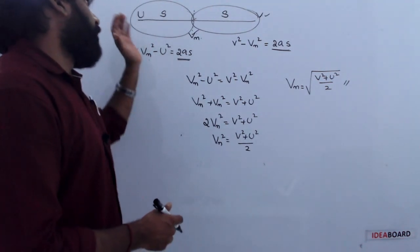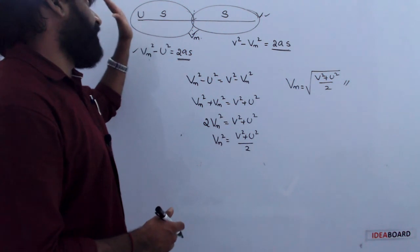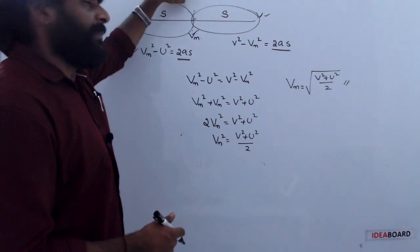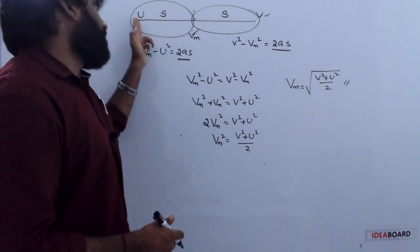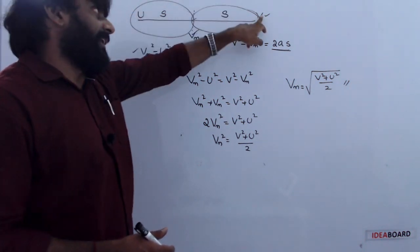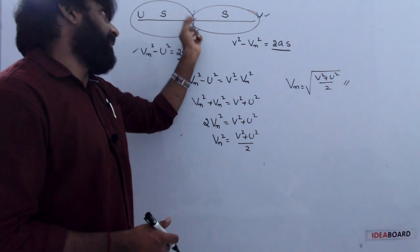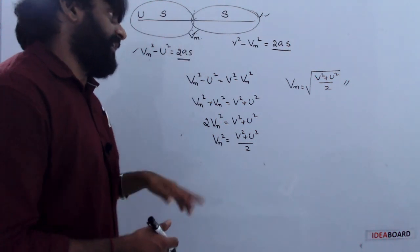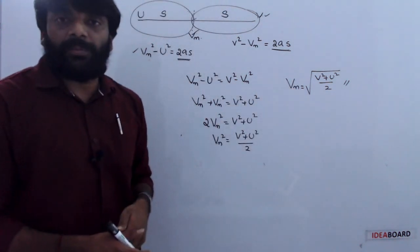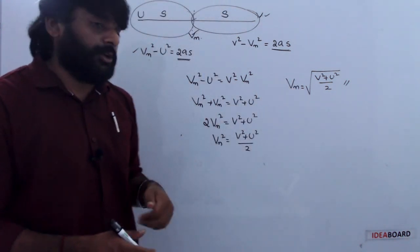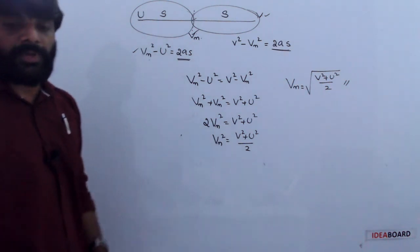So, for a body moving with uniform acceleration with initial velocity u and final velocity v, the midpoint velocity is equal to the square root of v square plus u square by 2.